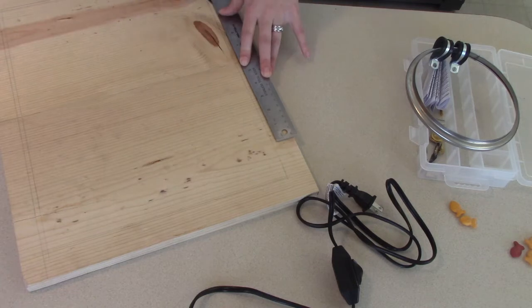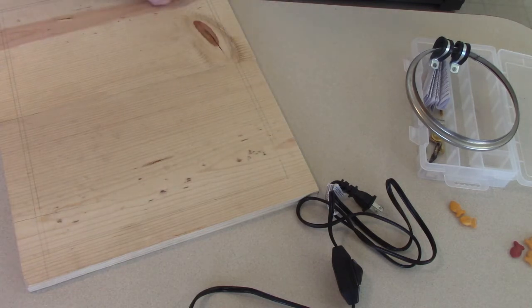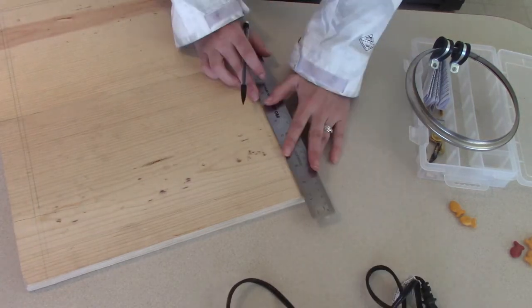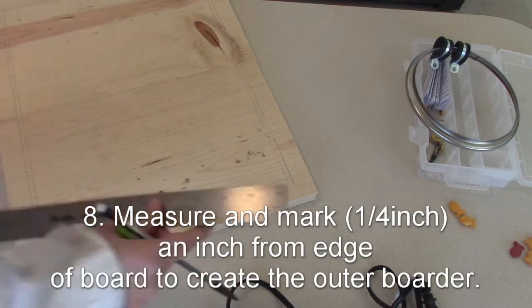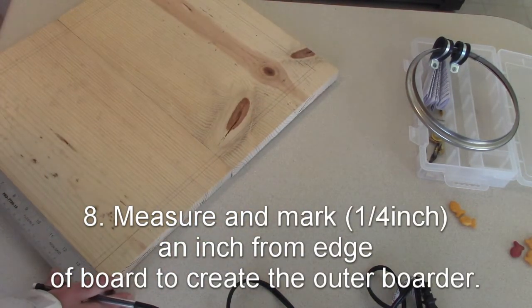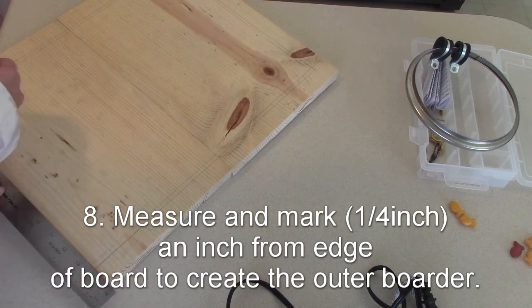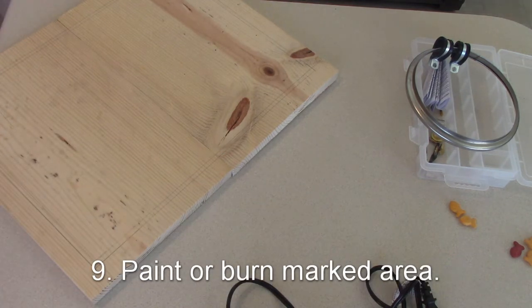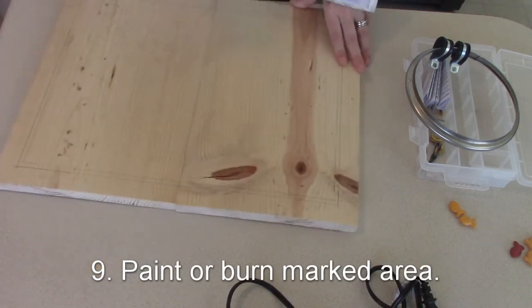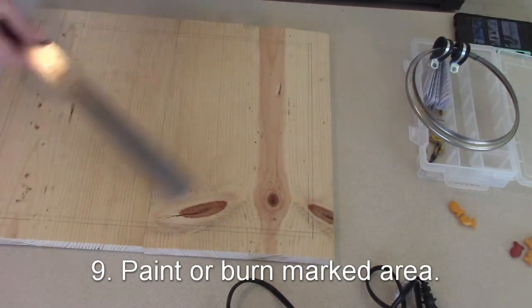The next step, I measured an inch apart from the edge of the board and then a quarter inch past that to create the outer border. And you could paint it or you could burn it. I wanted to kind of make a rustic look to my basketball hoop so I burnt it. Took a little while, 20 minutes or so.